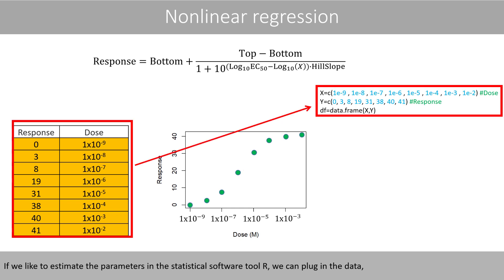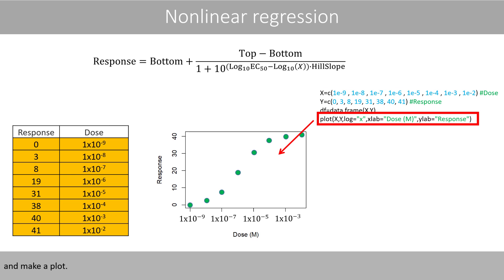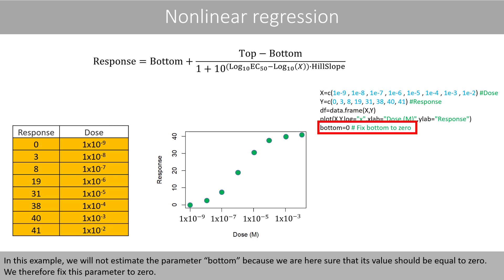If we like to estimate the parameters in the statistical software tool R, we can plug in the data and make a plot. In this example, we will not estimate the parameter bottom because we are here sure that its value should be equal to zero. We therefore fix this parameter to zero.